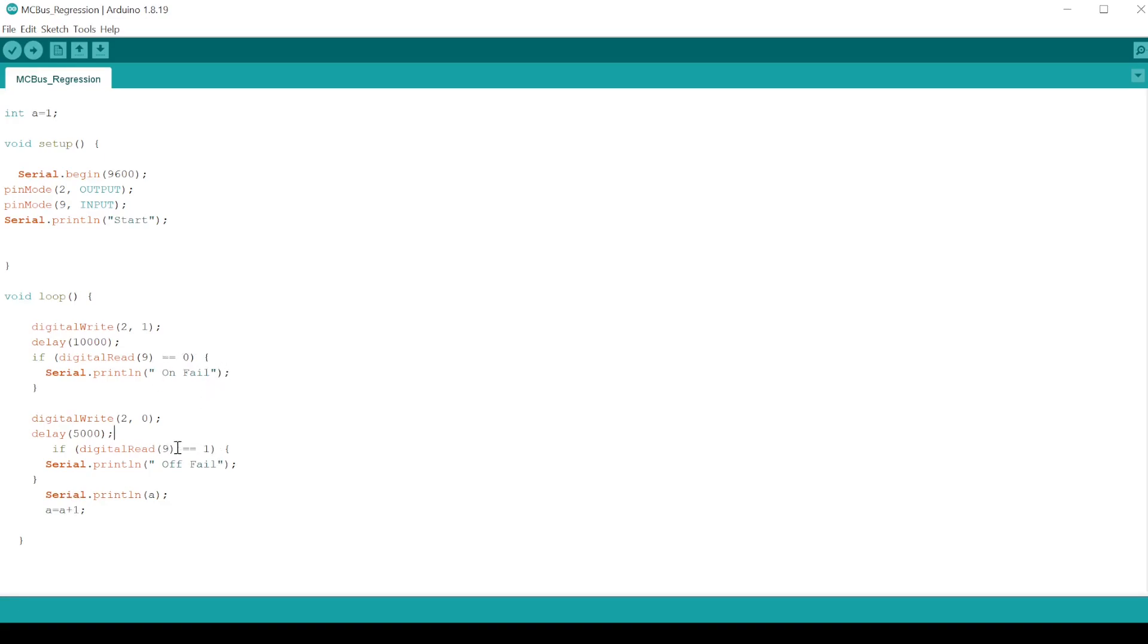We just count up and we should see, we shouldn't be seeing this on fail or off fail. We should just see the number sequence going up and we'll be able to count how many cycles we can do before there's any failure and make some decisions based on that. Let's connect this up and start it off and see how it behaves.